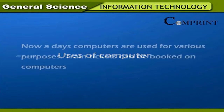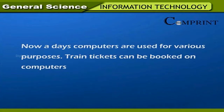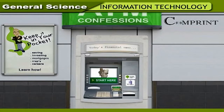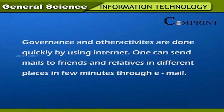Uses of computers. Nowadays computers are used for various purposes. Train tickets can be booked on computers; for example, in Hyderabad one can book tickets from Chennai to New Delhi. Money can be drawn from any bank other than the account-holding bank. Computers made it possible to draw money from ATM (Automated Teller Machine) anywhere in India and at any time. Different websites on the internet provide vast information. Governance and other activities are quickly done using the internet. One can send mails to friends and relatives in different places within a few minutes through email.